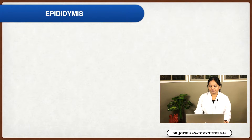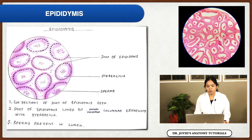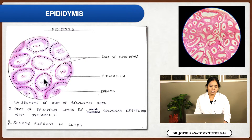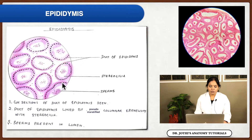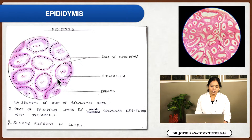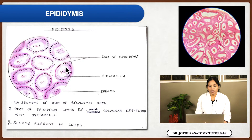The next structure is the epididymis, which is a storage organ. Since it is a highly coiled structure, when you take a cut section you will see many tubular profiles. In the epididymis, you will see the lumen and many ducts. The cut sections of many ducts of the epididymis are lined by pseudostratified columnar epithelium with stereocilia.